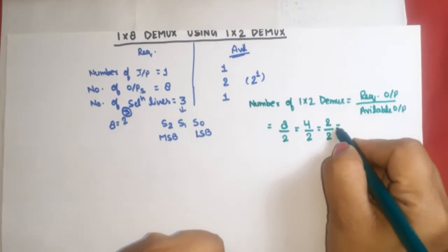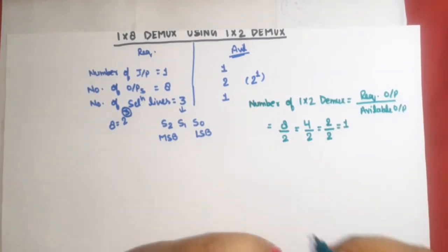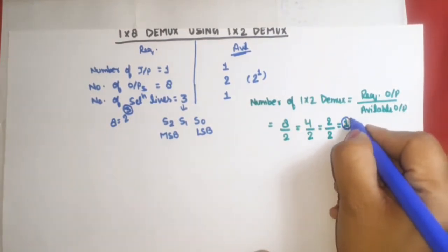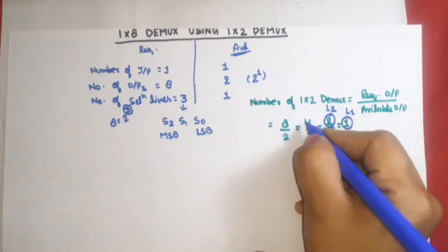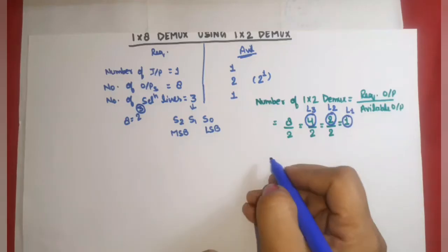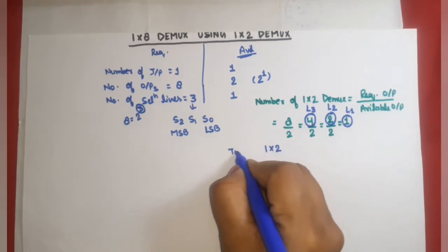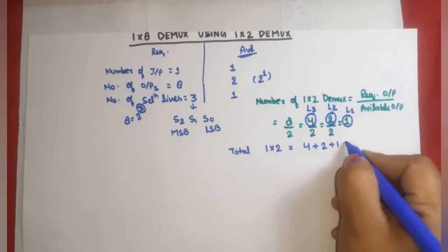We divide again, and the quotient is now 1. Since 1 cannot be divided by 2 without a fraction, we stop. The numbers we get from this successive division are: 4 demuxes at level 3, 2 demuxes at level 2, and 1 demux at level 1. So the total number of 1-to-2 demultiplexers required is 4 + 2 + 1 = 7.